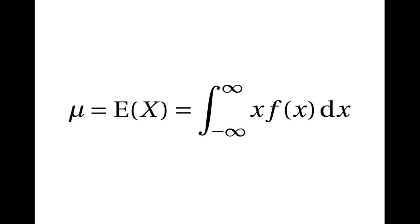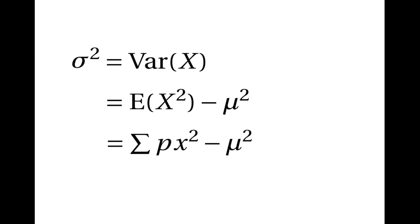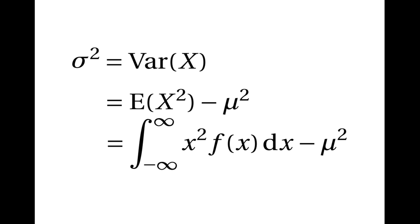The variance of a random variable, written σ² or Var(X), is equal to the expected value of X² minus the square of the mean. For a discrete random variable, that's the sum of the probabilities times the squares of the possible values of X, minus the mean squared. For a continuous random variable, we replace the sum with an integral and the probabilities with the probability density function, so the variance is the integral of x²·f(x) over all possible values of x, minus the square of the mean.